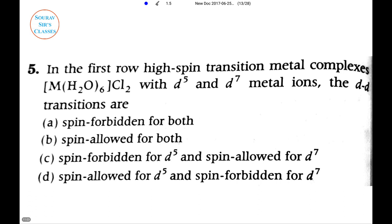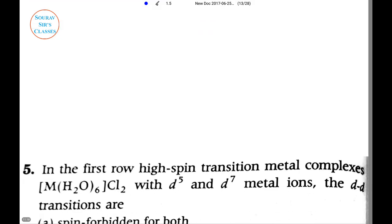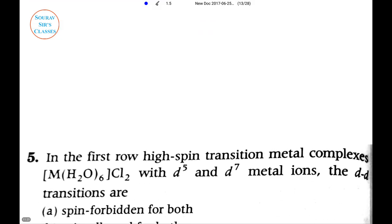Now we proceed to the next question. Here they have given a high-spin transition metal complex. For the first row of high-spin transition metal complexes M(H2O)6Cl2 with d5 and d7 metal ions, they're asking about the d-d transitions. So given this basic structure, this M2+ ion - if M2+ ion has d5 configuration then in the first row transition series it must be Mn. Similarly d7 must be Co.